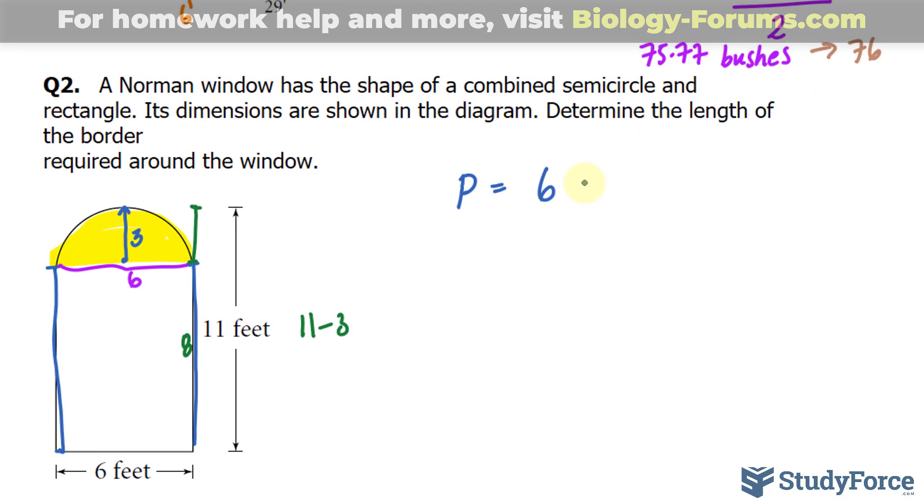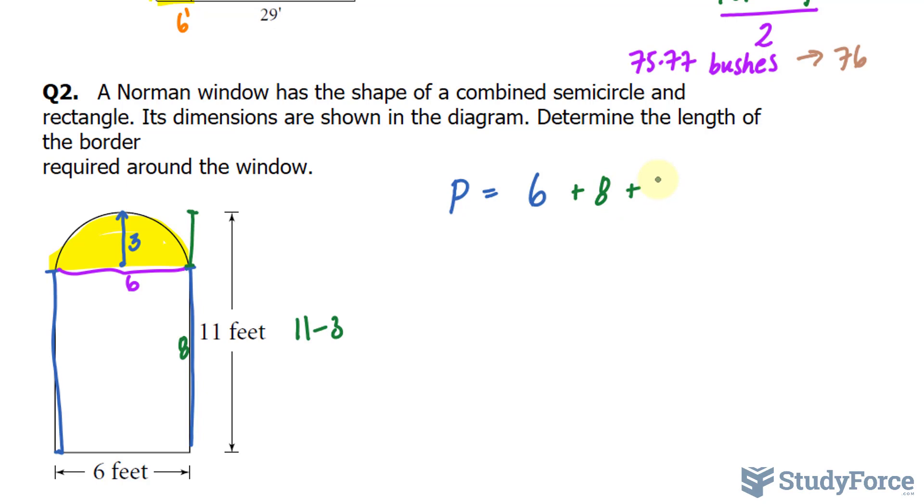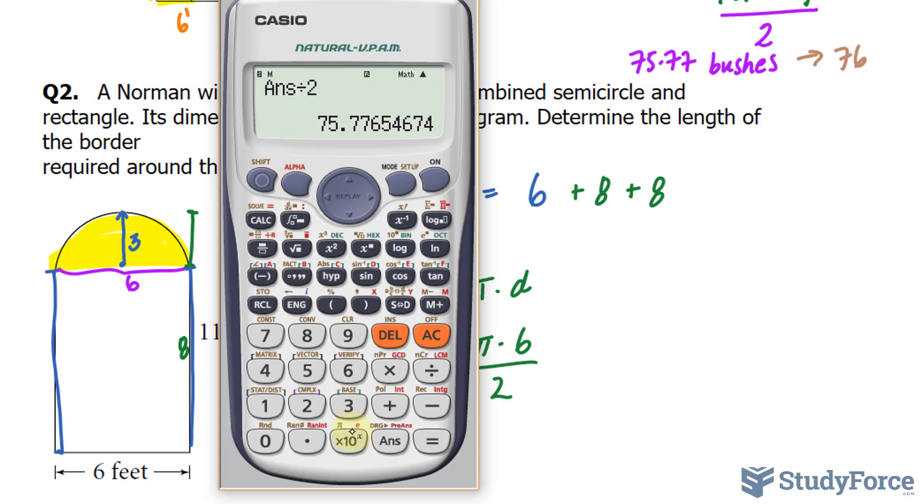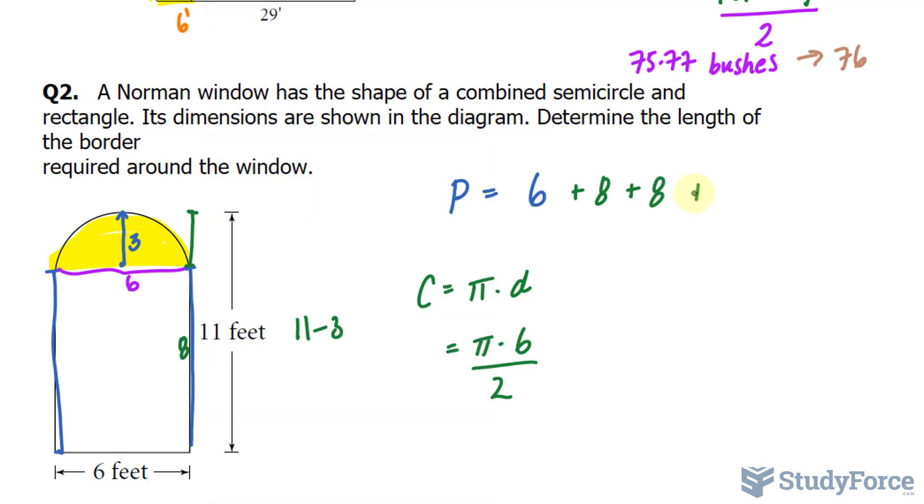So we have 6 plus 8 plus another 8, and now we need to find again the semicircle circumference. We'll use the formula, C is equal to πd. So we have π times 6, divided by 2, because it is not a complete circle. π times 6, divided by 2, that's approximately 9.42.